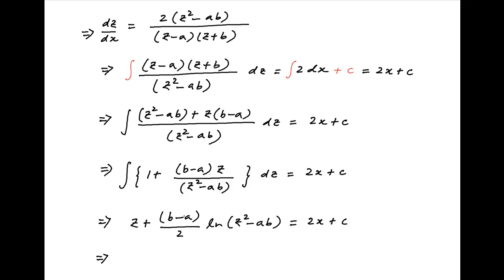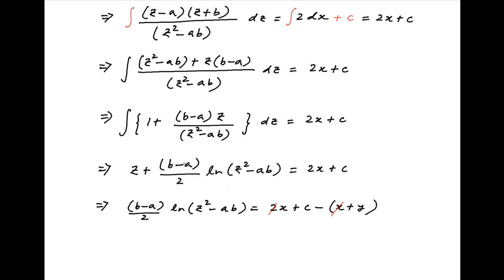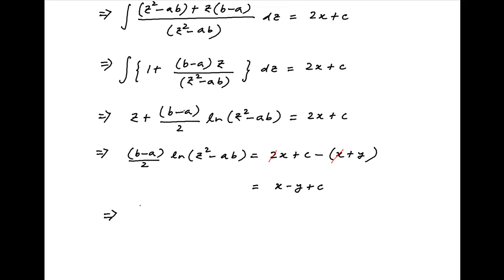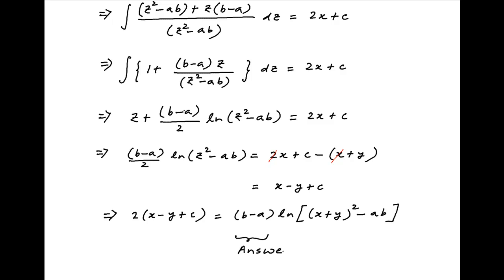Replacing z with x plus y, we get b minus a upon 2 times ln of z square minus ab is equal to 2x plus c minus x plus y. The right hand side simplifies and is equal to x minus y plus c. This implies that 2 times x minus y plus c is equal to b minus a times ln of x plus y whole square minus ab, which is the required solution of the given differential equation.